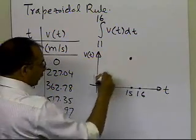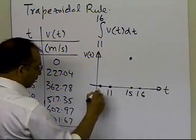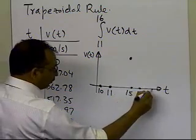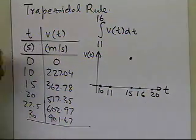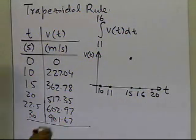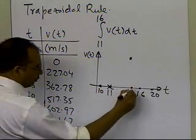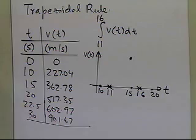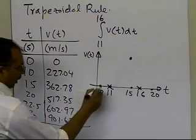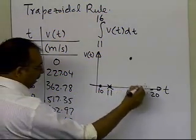I know the value at 10 and at 20. The data points I know are at 10, 15, and 20, but I want to integrate from 11 to 16. So I'm showing these data points: I want to integrate from 11 to 16, but the known data points are at 10, 15, and 20.